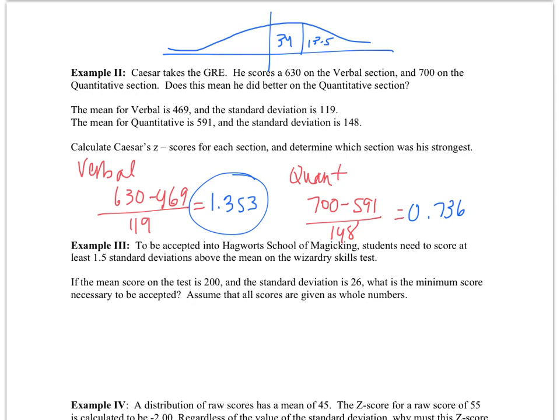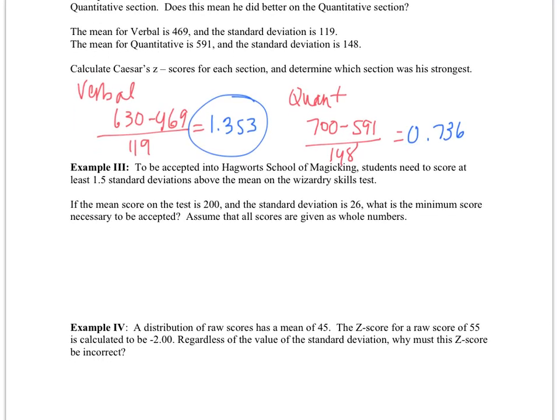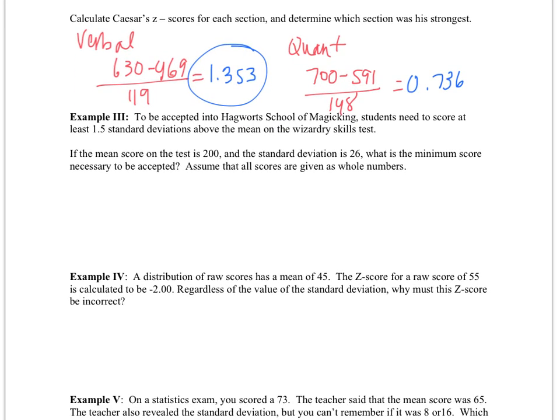In example three, we have to be accepted into Hogwarts School of Magicing, which sounds awesome by the way. Students need to score at least 1.5 standard deviations above the mean on the wizardry skills test. If the mean score is 200 and the standard deviation is 26, what is the minimum score necessary to be accepted? We have to score at least 1.5. So my score minus the mean divided by standard deviation needs to be greater than or equal to 1.5.